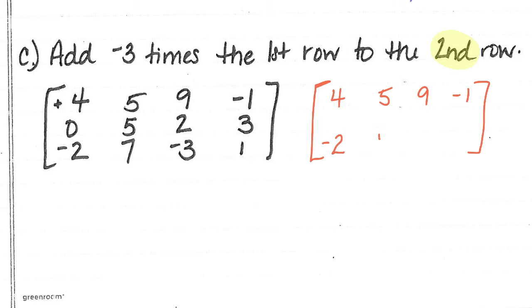And what they're doing is they're asking us to take negative 3 times the first row. And then we are going to add it to the second row, which looks like this. Negative 3 times 4 is negative 12. Plus 0 is negative 12.